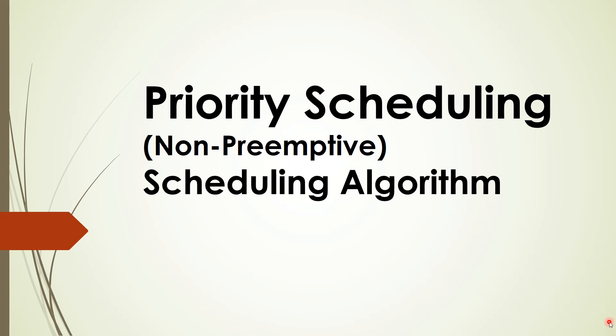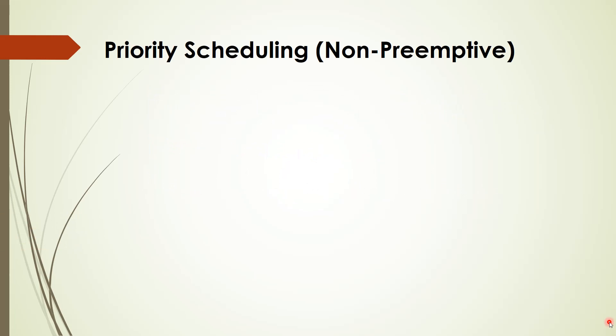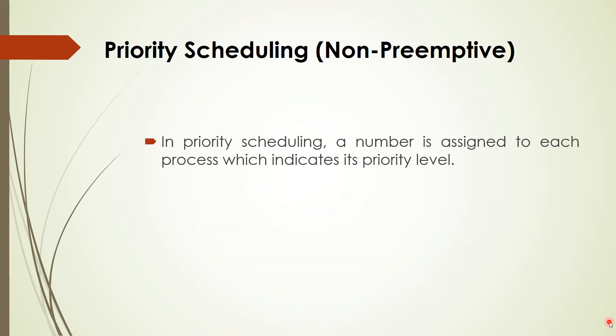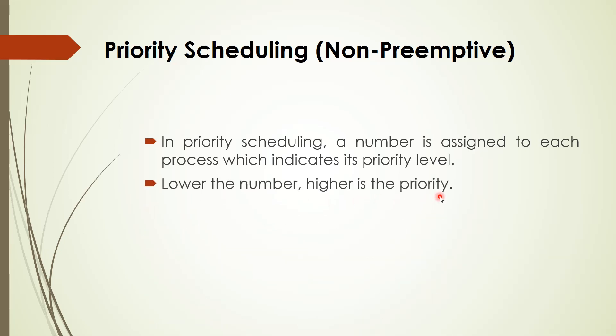Today we will see priority scheduling, which is a non-preemptive scheduling algorithm. In priority scheduling, a number is assigned to each process which indicates its priority level. So in addition to burst time and arrival time, each process will be assigned one priority. Lower the number, higher the priority.